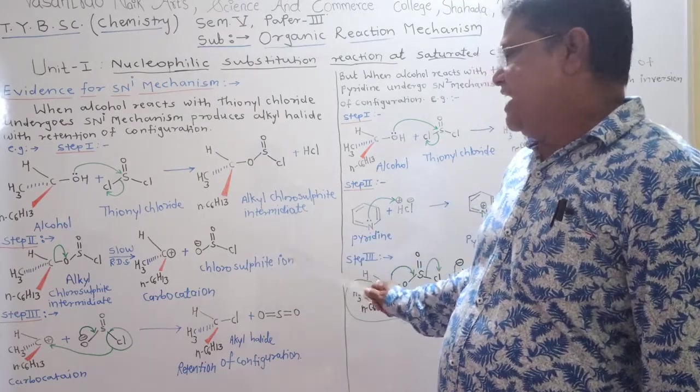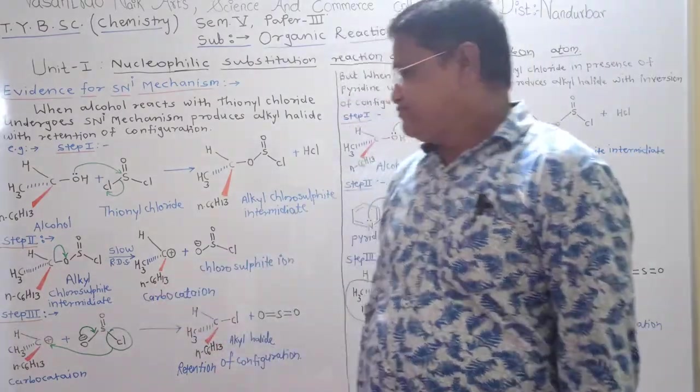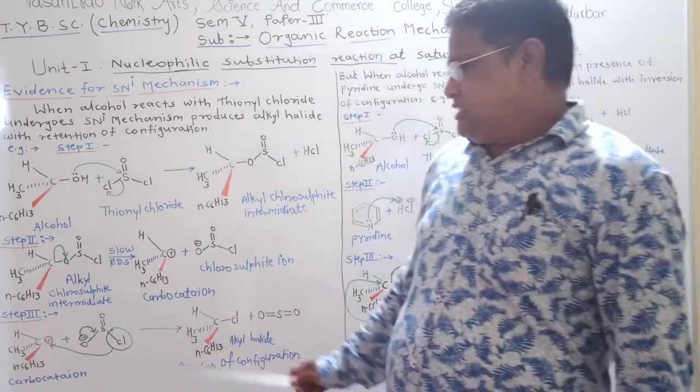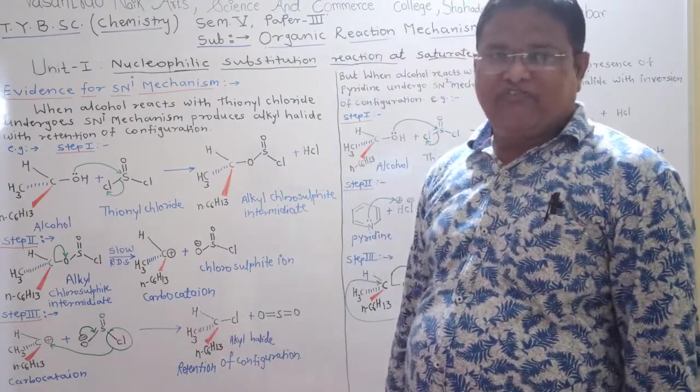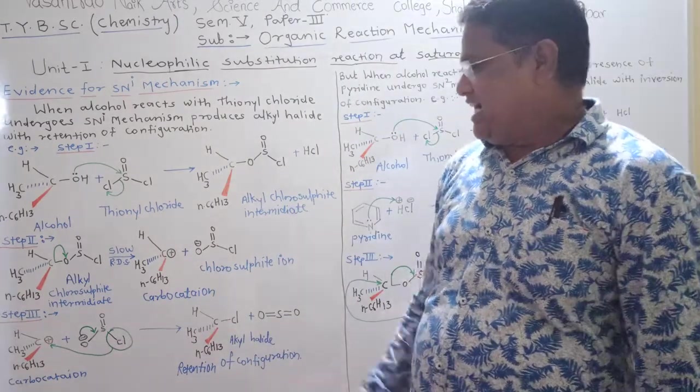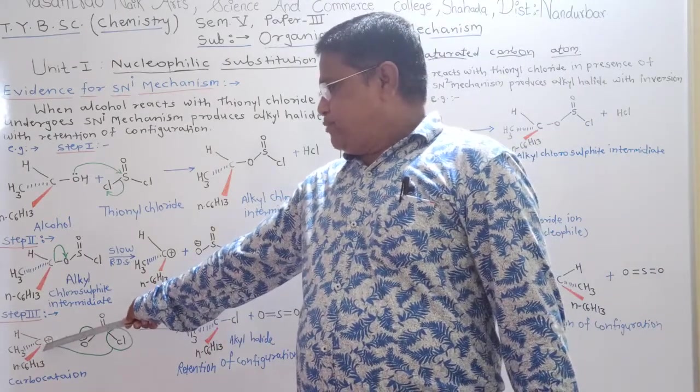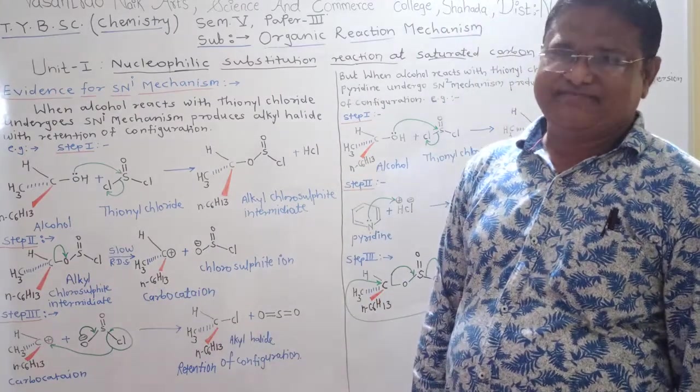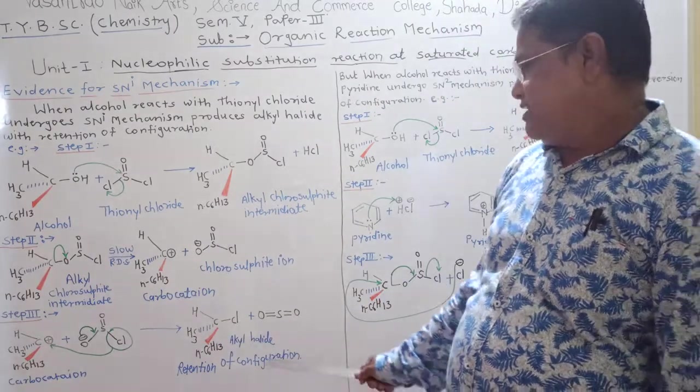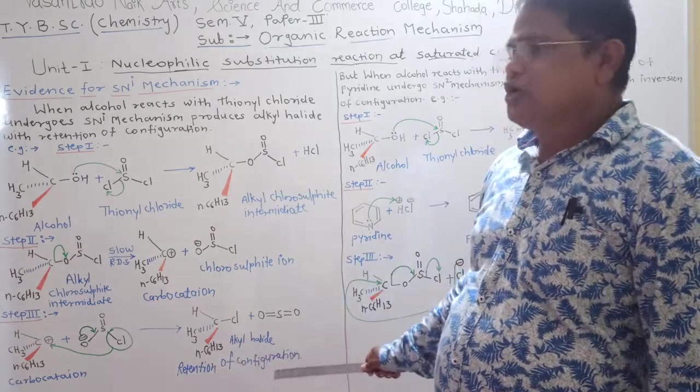In step 3rd, chlorine atom acts as nucleophile and attacks from that site from which leaving group departs to form alkyl halide with retention of configuration.